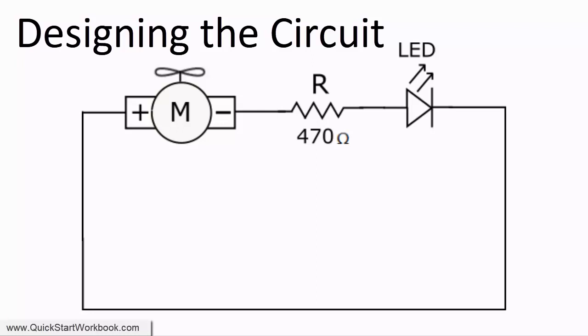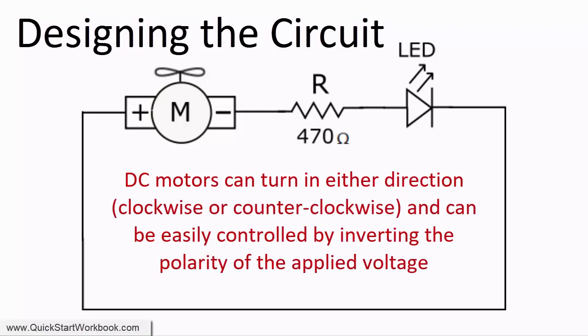If this circuit doesn't work for you try connecting the resistor and the LED to the positive wire from the motor. The polarity of DC motors isn't as rigid as it is for a battery, and it may be that for your DC motor you have to connect the resistor and the LED to the other wire.